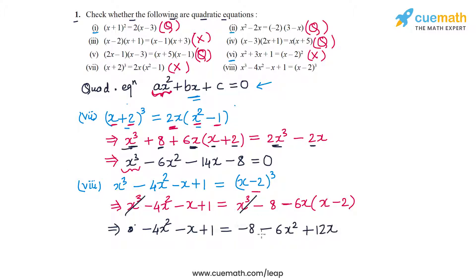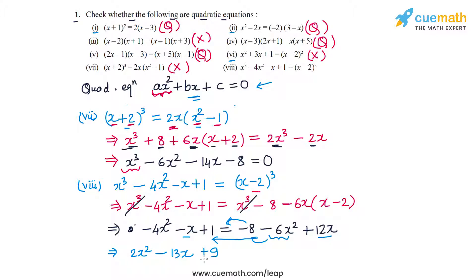This appears to be a quadratic equation. Writing it in standard form: shifting −6x² to the left gives −6x² − 4x² = −10x²... wait, actually we get 12x² − 4x² − 6x² = 2x². For the x terms: −x − 12x = −13x. For the constant: 1 + 8 = 9. So the equation becomes 2x² − 13x + 9 = 0, which is clearly a quadratic equation.